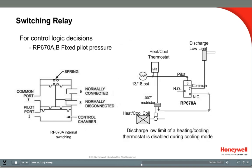In this example, the discharge low limit is disabled during the cooling mode. At 13 psi supply air, the thermostat is in the cooling mode and the RP-670A switch has port 7 connected to port 6, disabling the heating low limit controller. At 18 psi supply air, the thermostat is in the heating mode and the RP-670A switch has port 7 connected to port 8, enabling the heating low limit controller. These switching relays are often called summer-winter switches or heating-cooling switches. They switch with dual main air pressures used to switch two-temperature thermostats.